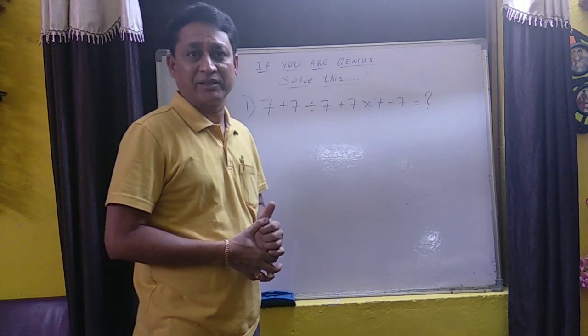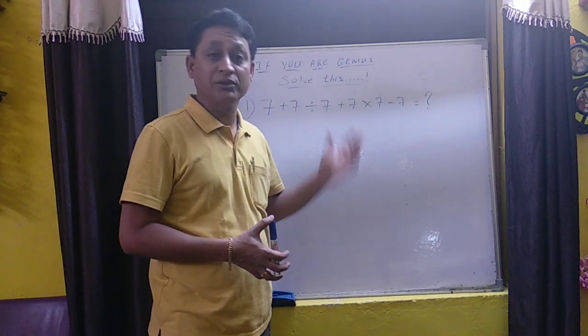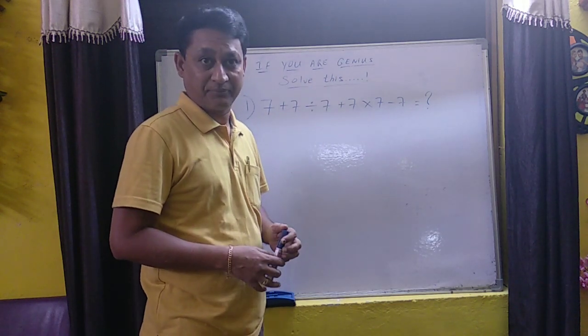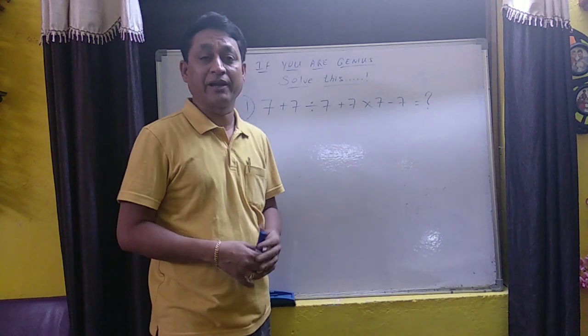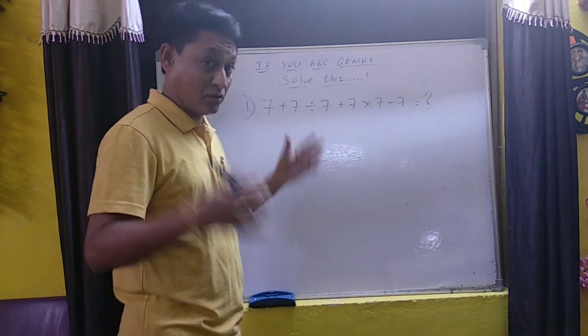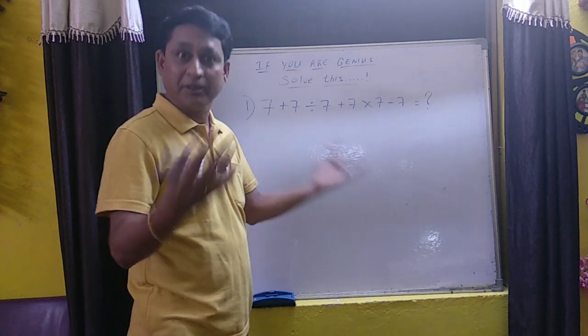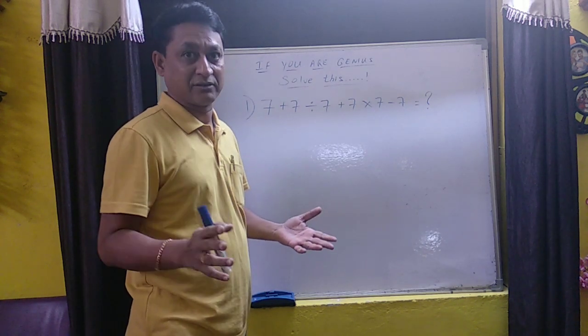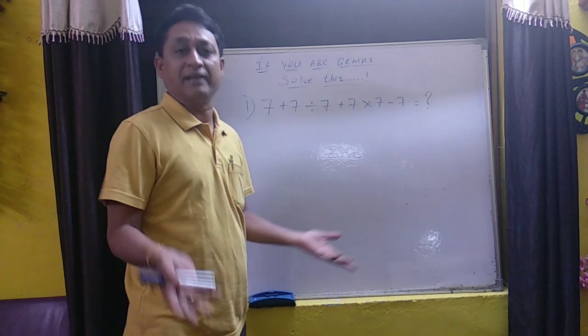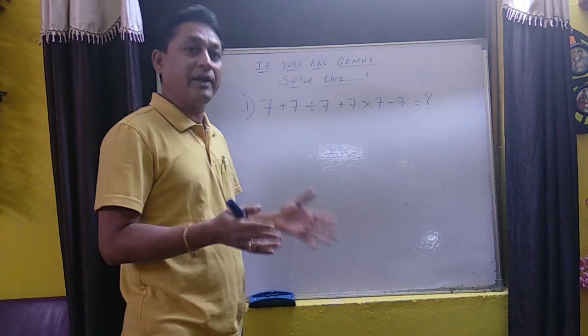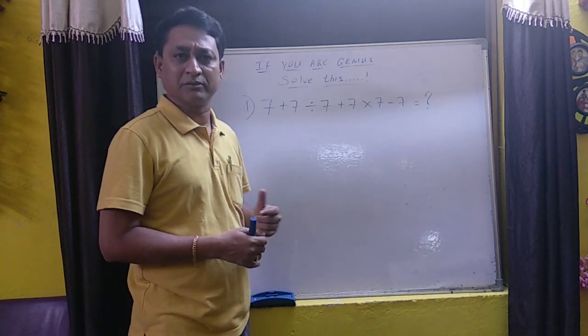Usually we are nowadays getting questions like, if you are a genius, solve this. Questions like these we get on WhatsApp, Facebook and all. All of our friends jump into solving it and you get multiple answers. You won't usually get one answer, you will get multiple answers. And why is that?